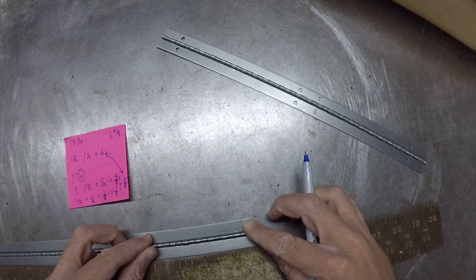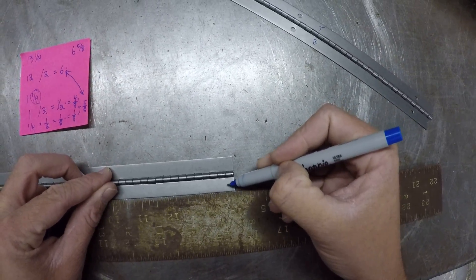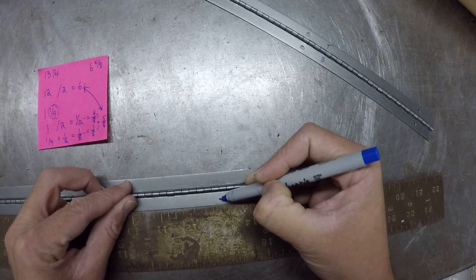On the far side, I want to line up with a whole inch. From that whole inch, I'm going to come down one and I'm going to put a mark.